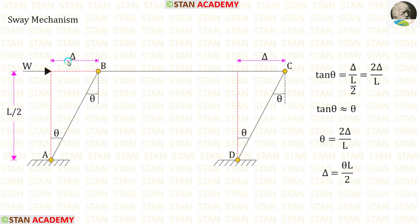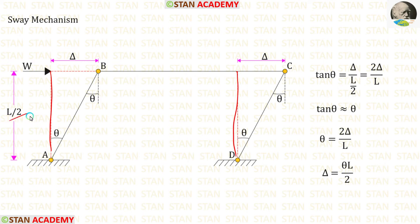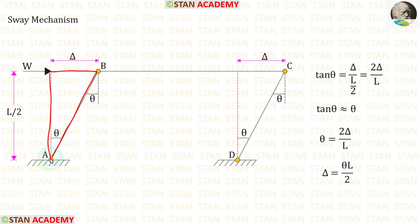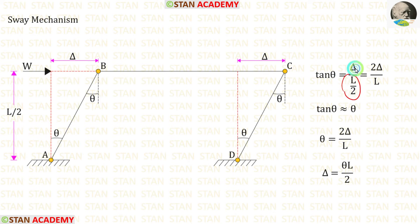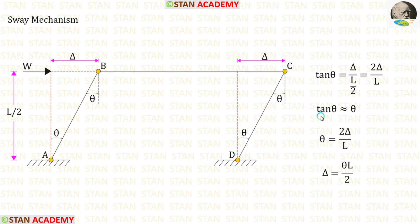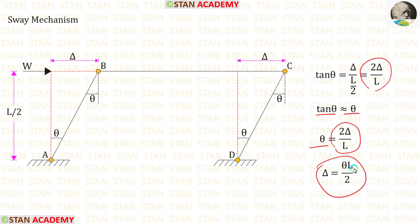Let us keep the sway displacement as delta and the angle at point A as theta. Since both columns have the same height L/2, the angles at points B, C, and D will also be theta. In the triangle formed, tan theta equals delta upon L/2, giving theta equals 2 delta upon L, and therefore delta equals theta L upon 2.